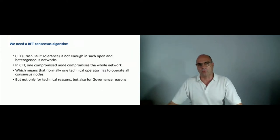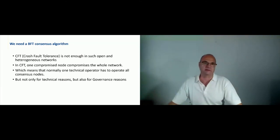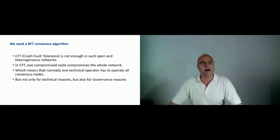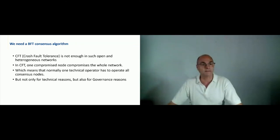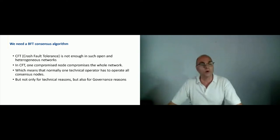Now, what is required for this type of blockchain network? I will address two things. One is the consensus algorithm — we need a Byzantine fault tolerant consensus algorithm, because CFT crash fault tolerance or Raft, for example as it is right now in Fabric, is not enough in such open and heterogeneous networks. In CFT, one compromised node compromises the whole network, meaning normally one technical operator has to operate all consensus nodes. We need BFT consensus algorithms — Byzantine fault tolerant consensus — not just for technical reasons but also for governance reasons.